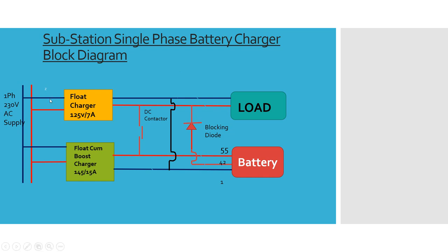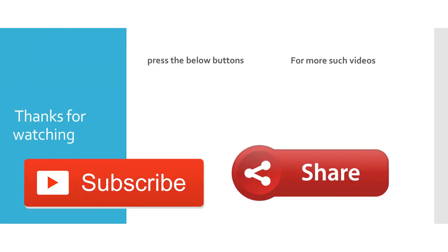In case the float charger fails, the float-come-boost charger can also be used as a float charger, provided that the DC contactor is in working condition. When you switch it to boost mode, this contactor must open so that the tapping cell voltage gets to the load and not the full 145 volts. This blocking diode must also be in working condition, as must this contactor — for the overall DC system to operate safely.